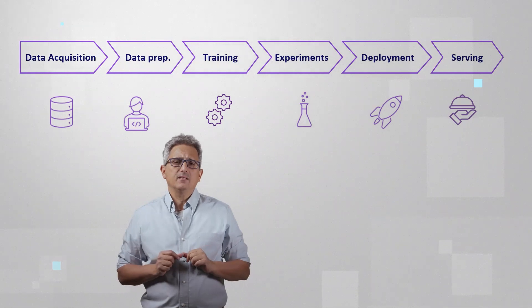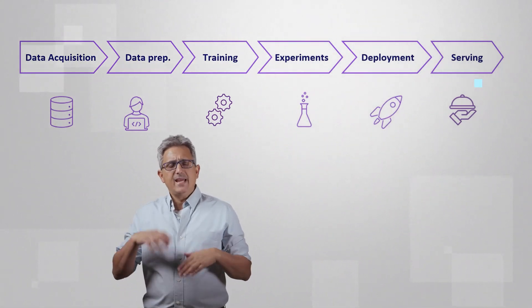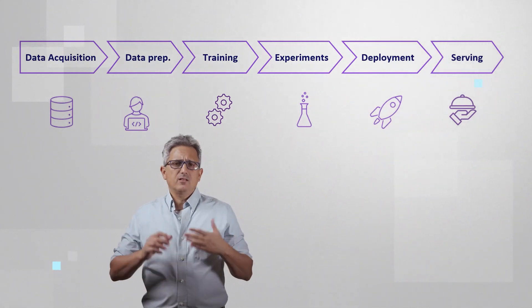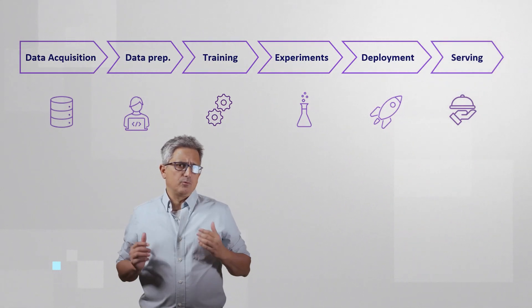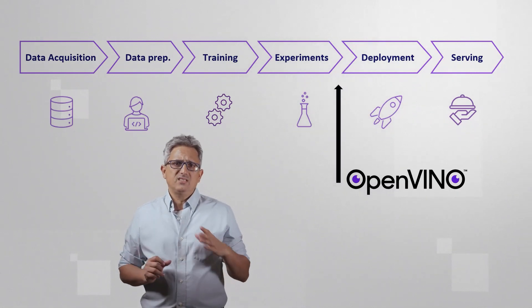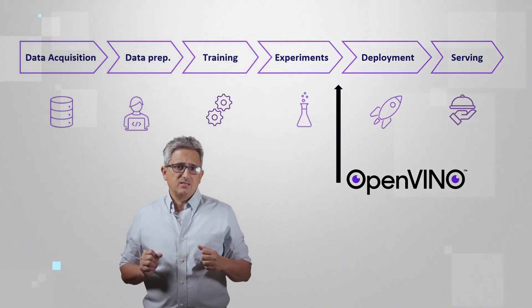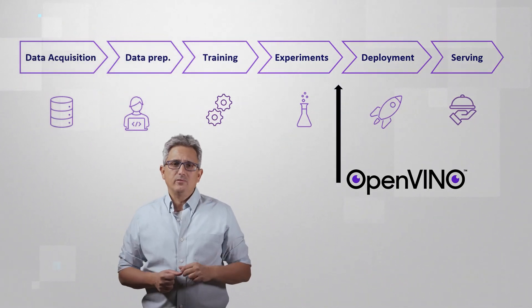The full AI pipeline starts with data. Data that has to be cleaned up and arranged and then there's a long iterative model training process and validation of the results. The end result of this stage is a model that meets our accuracy expectation and this is a starting point for OpenVINO.